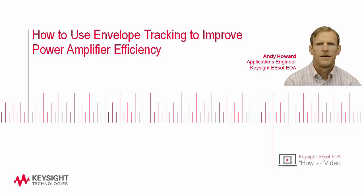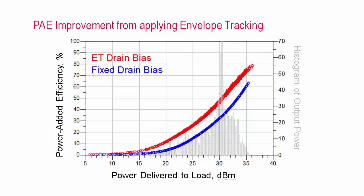Envelope tracking is a means of improving power amplifier efficiency. This shows the instantaneous PAE of a power amplifier with and without envelope tracking applied. The gray histogram shows the distribution of the output power of the modulated signal.